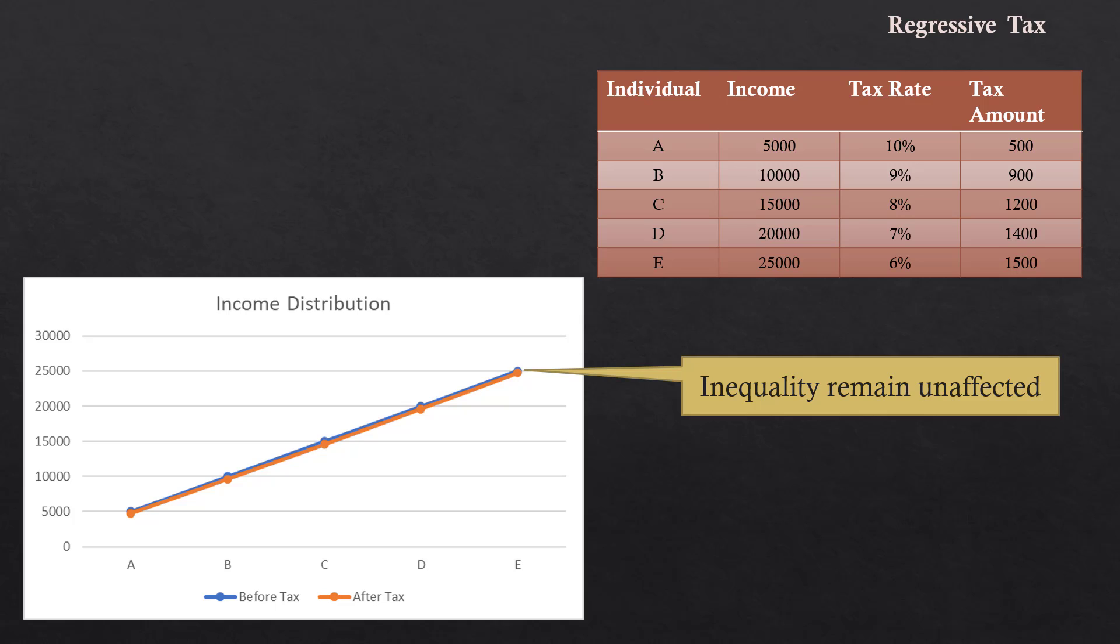Such a regressive type of income tax was practiced by some Western European countries in the early 19th century. They used it mainly to make the people to work more and earn more and pay less tax.